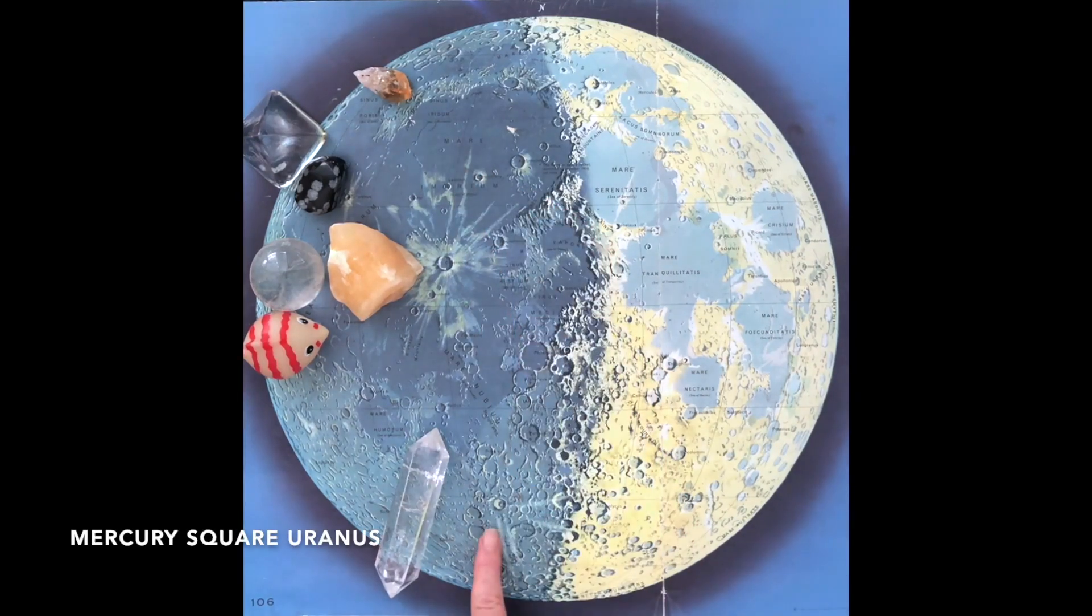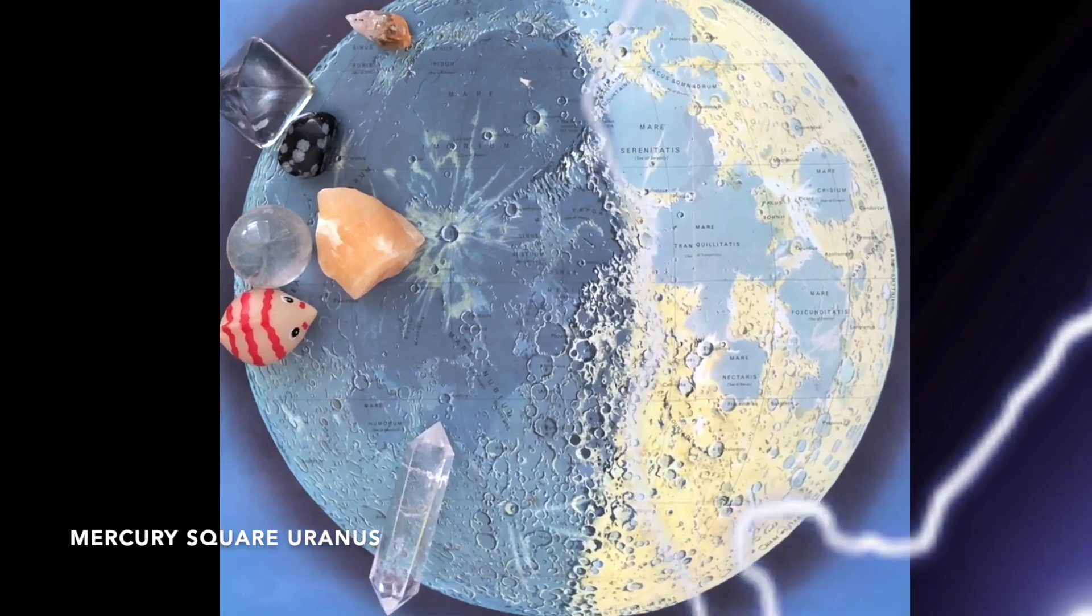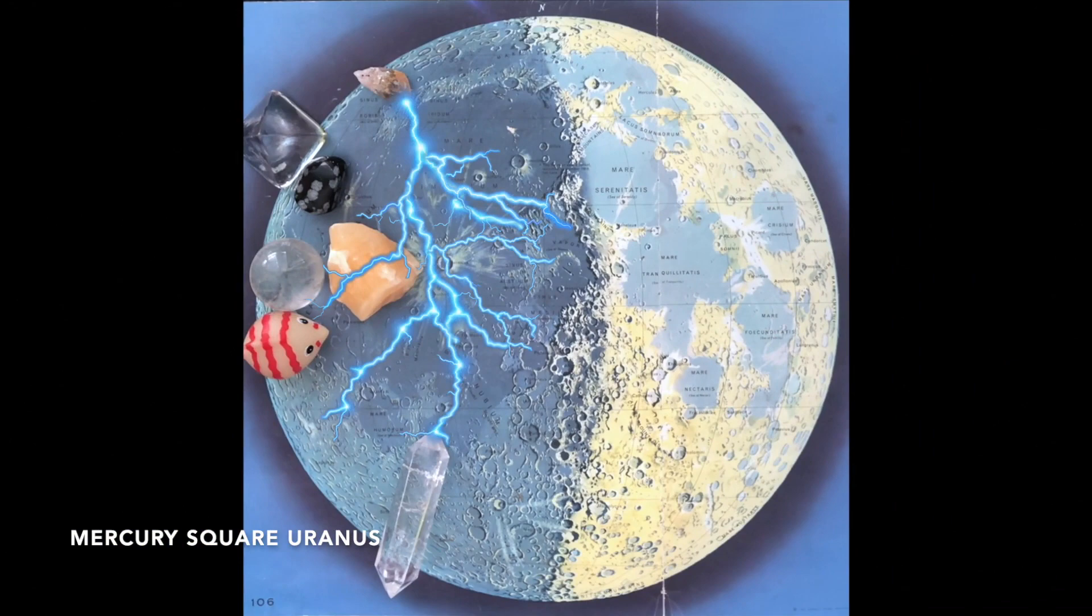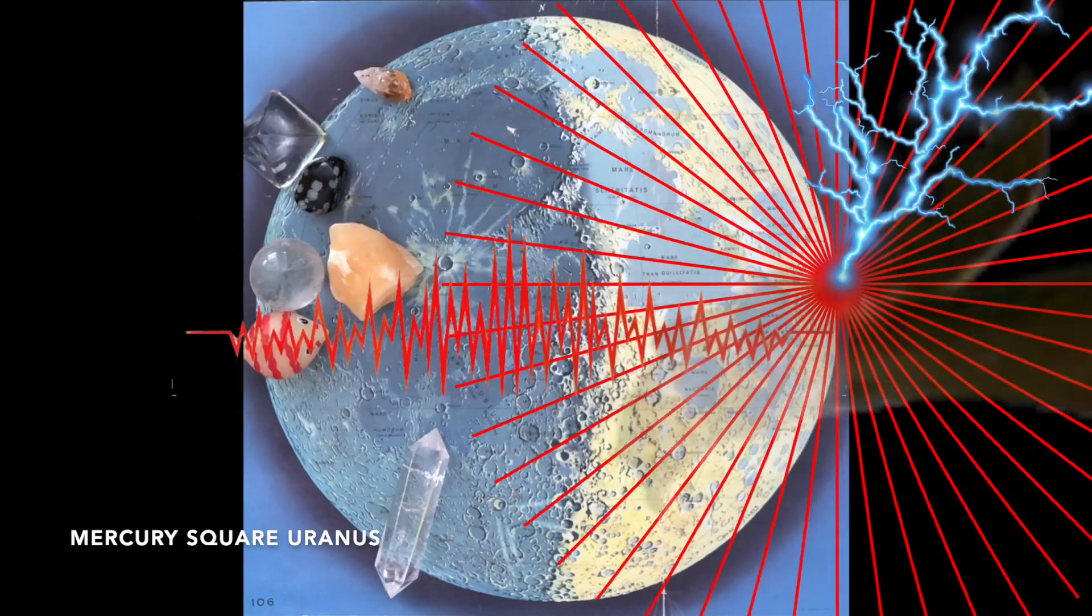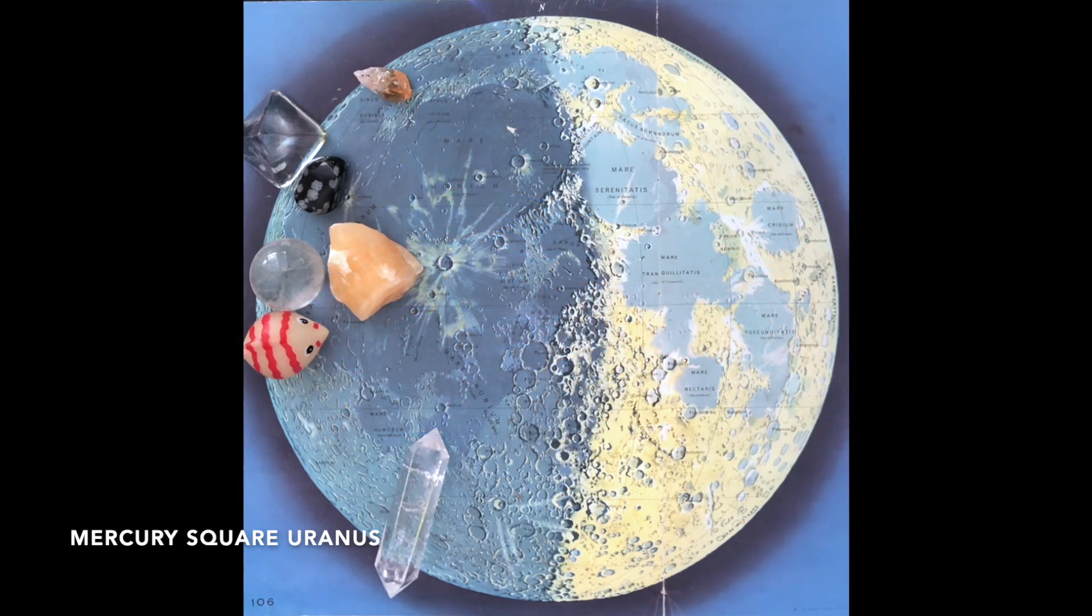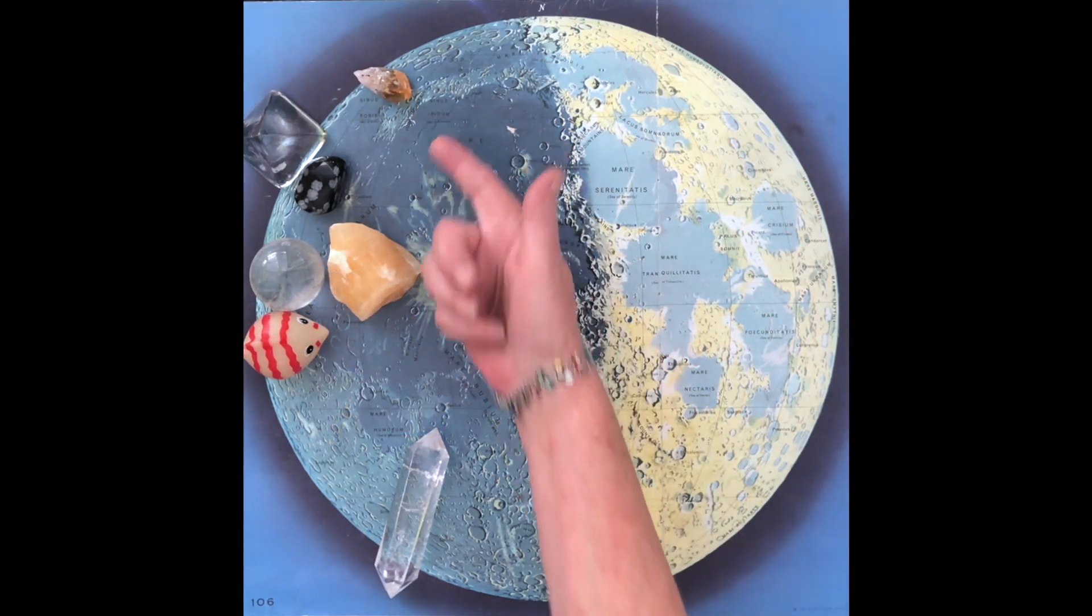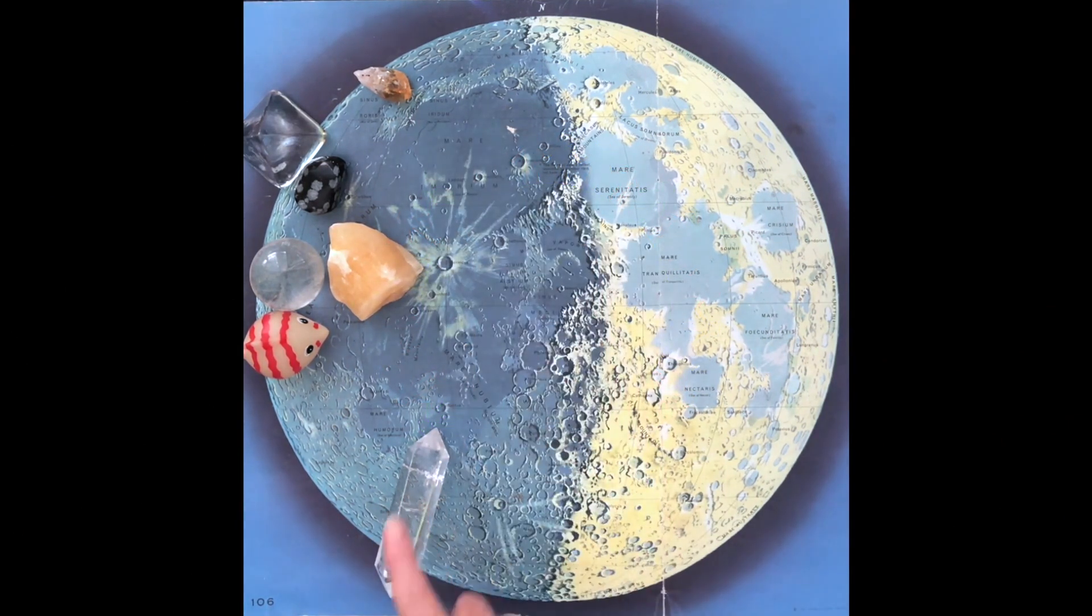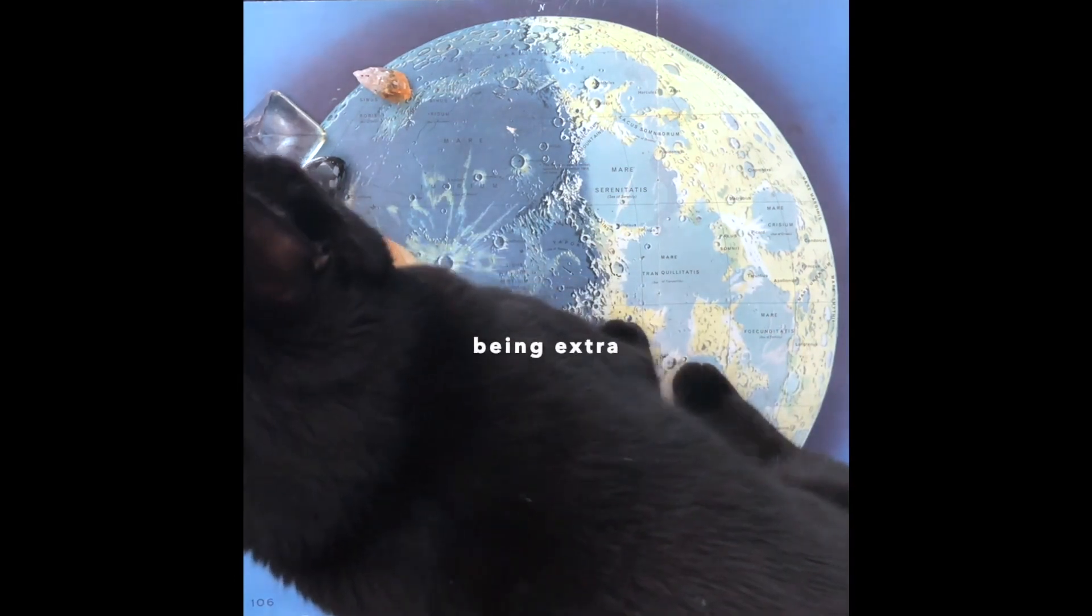Mercury square Uranus is like charging ahead on the wrong foot, getting the wrong end of the stick. It can bring about an outburst of frustration or a shock announcement, a change of plans, perhaps needing more consultation or a more original approach. Mercury's in Aquarius, which likes to consult the group, but it's having a problem getting the more rebellious aspects in line.